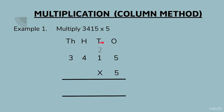Now we will go to the tens place. We will multiply 5 by 1 — 5 ones are 5 — and add the 2 carried over, which gives us 7. We will write the 7 at the bottom of the tens column.